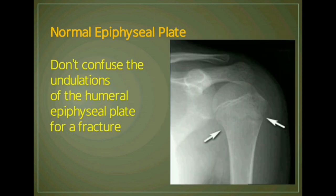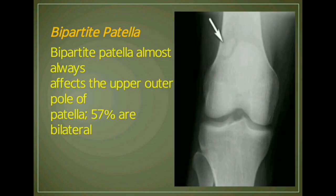Another example of a fracture mimic is the normal growth plate — specifically the unfused epiphyseal plate of the humerus. Another example is bipartite patella, which is a congenital condition present at birth that occurs when the patella is made of two bones instead of a single bone.